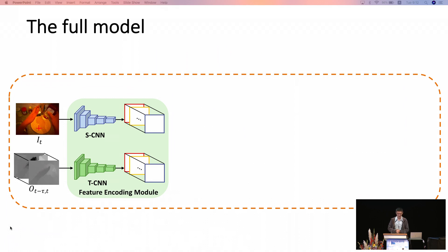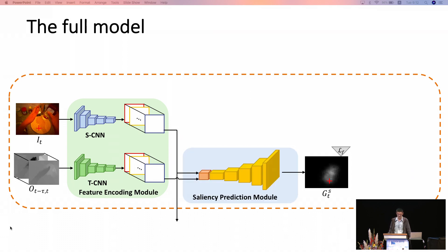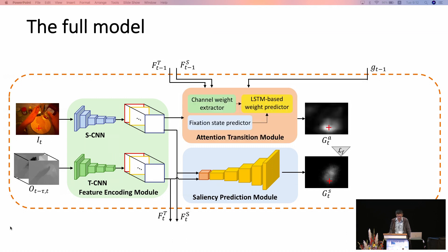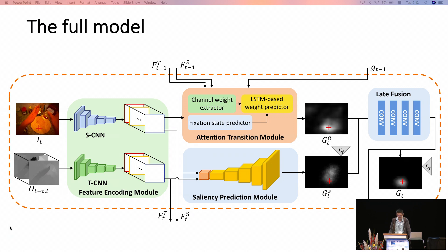Our full model takes as input a single RGB frame and optical flow, forwarding them through a two-stream network. The first part is a bottom-up saliency prediction model, and the second is our proposed top-down attention transition model. We use a simple late fusion technique with four convolutional layers to fuse the outputs of the attention transition model and the saliency prediction model.